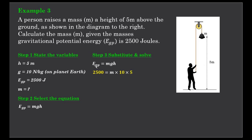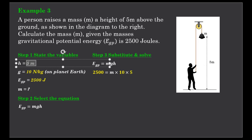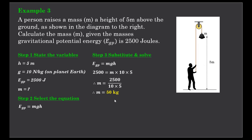Substituting our values in: the gravitational potential energy is 2500 joules, mass is unknown, gravitational field strength is 10 newtons per kilogram, and height is 5 metres. To get M by itself — at the moment it's multiplied by 10 and by 5 — we divide both sides by 10 and 5. So the mass is 2500 divided by the product of 10 times 5, giving a mass of 50 kilograms. An object raised 5 metres to gain 2500 joules of gravitational potential energy has a mass of 50 kilograms.